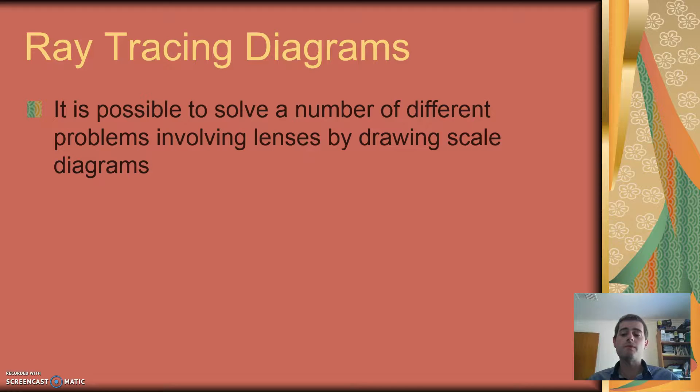So there's two methods of solving problems with lenses. One is what we look at today, the other one is called the thin-lens equation. Now, the thin-lens equation and the algebra can be a bit brutal, so in some ways this is probably an easier way to understand what's happening, even if the process involved is a little bit tedious sometimes.